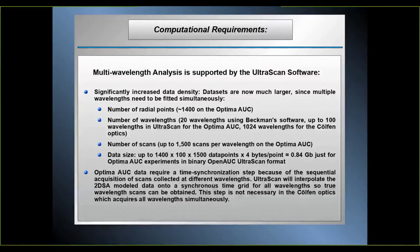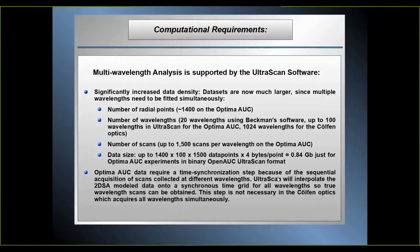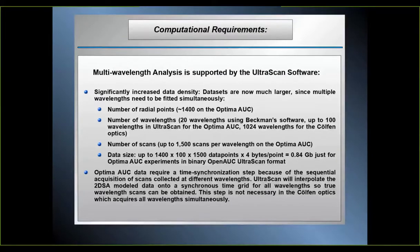In the OpenAUC UltraScan data format, everything is binary, which compresses the data down significantly. The Optima AUC data also require a time synchronization step because all wavelengths are acquired sequentially — they're not collected at the same time. Therefore, it would be difficult to obtain your wavelength scan since every wavelength scan was acquired at a different time. UltraScan will interpolate the data back by doing a 2DSA model and then creating a synchronous time grid where you can recreate the wavelength domain. This step is not required if you use the Cölfen optics, which can acquire everything at the same time — so that's a big benefit.